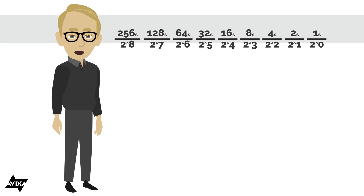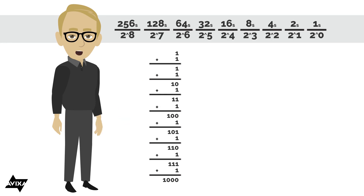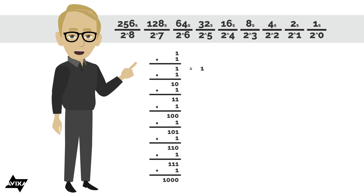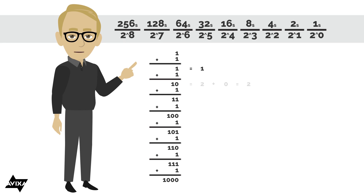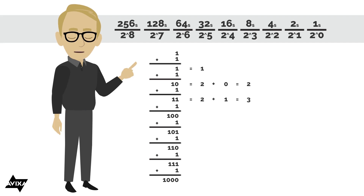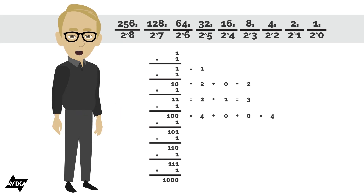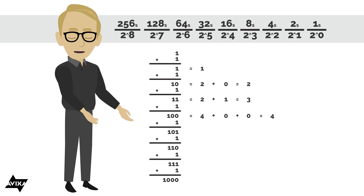So now that we know what these places represent, let's take these binary numbers and convert them to something we would recognize in decimal. For the first one, I just have 1 in the 1's place, so that would equal 1 in decimal. For 1, 0 — I have something in the 2's place, but nothing in the 1's place. 2 plus 0 would be 2. For 1, 1 — I have something in the 2's place, something in the 1's place, 2 plus 1 is 3. For 1, 0, 0 — I have something in the 4's place, nothing in the 2's place, nothing in the 1's place, so 4 plus 0 plus 0 would be 4.